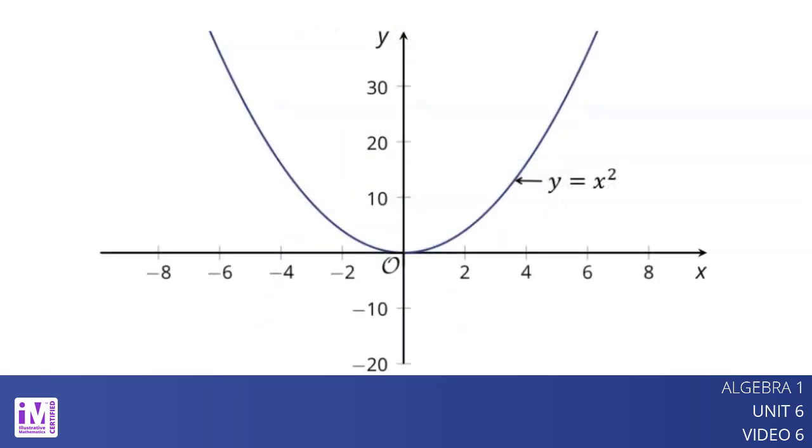Here is a graph of y equals x squared. Its vertex is at 0, 0. Adding a constant term 12 gives y equals x squared plus 12 and raises the graph by 12 units. Its vertex is at 0, 12.